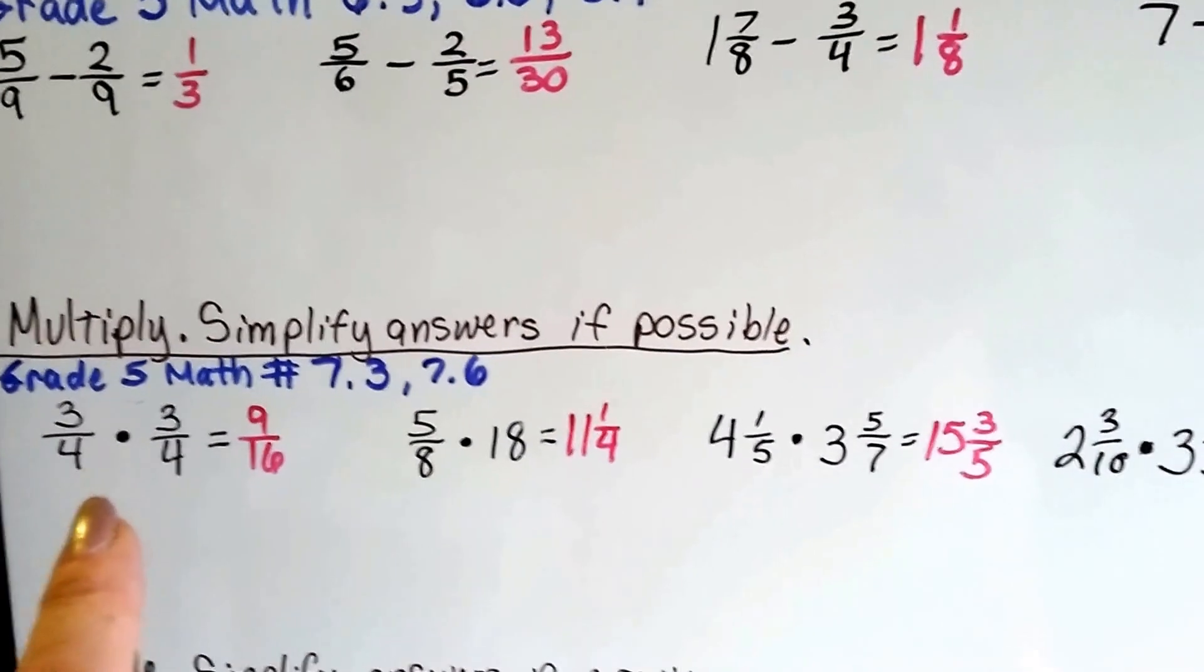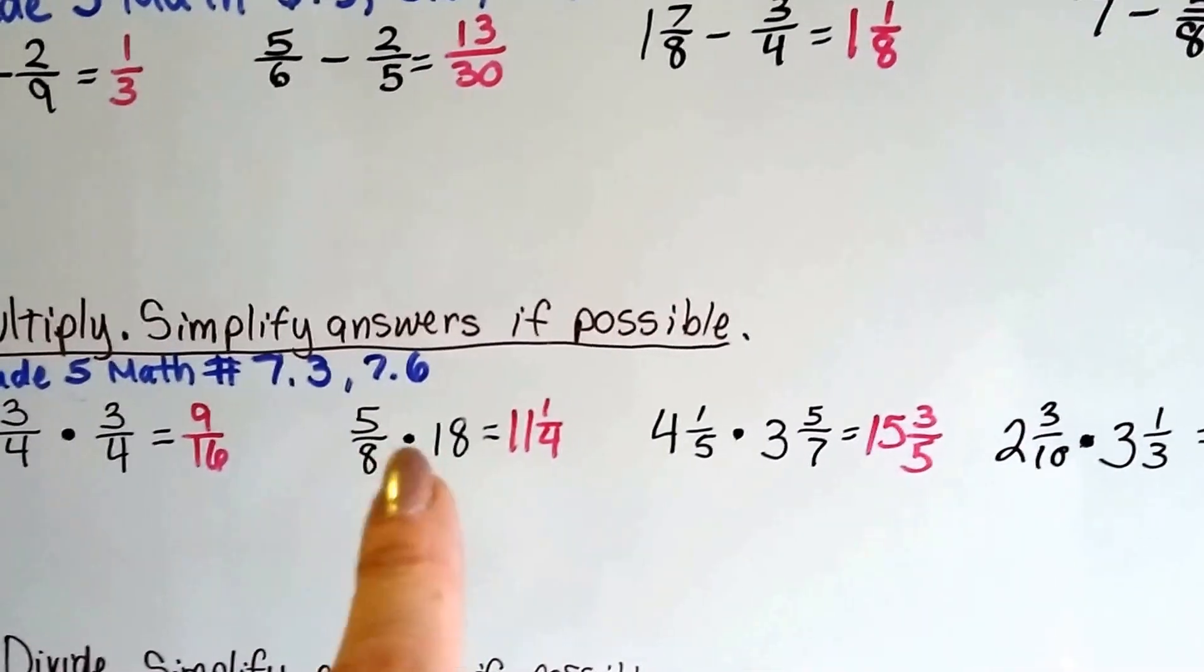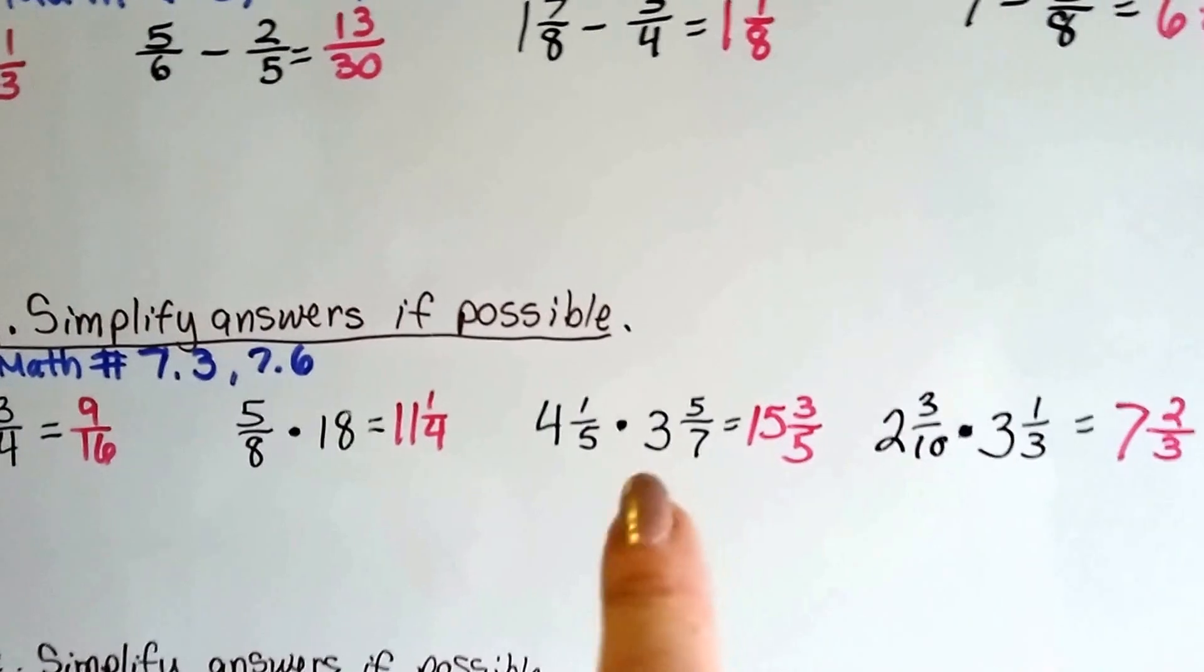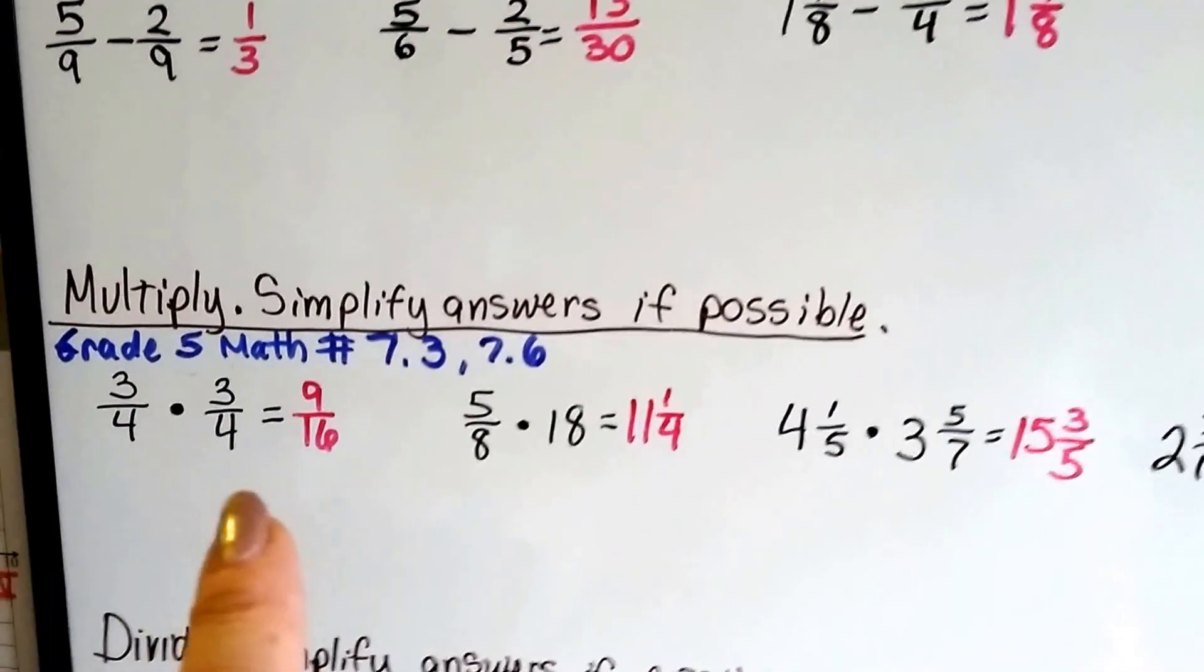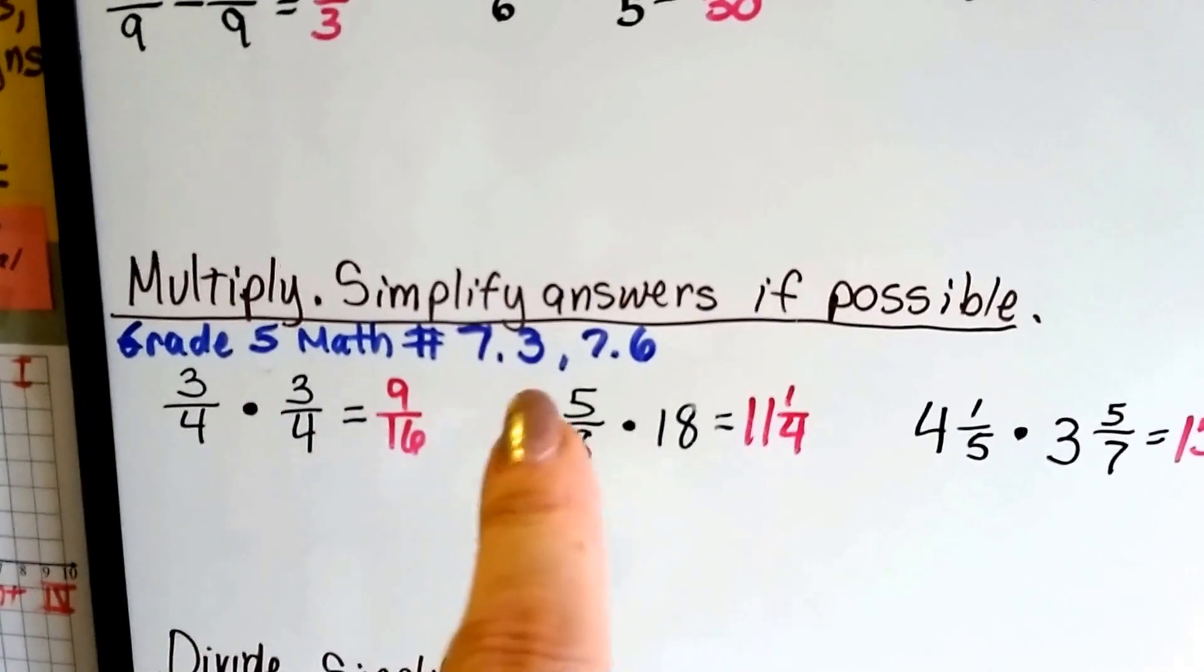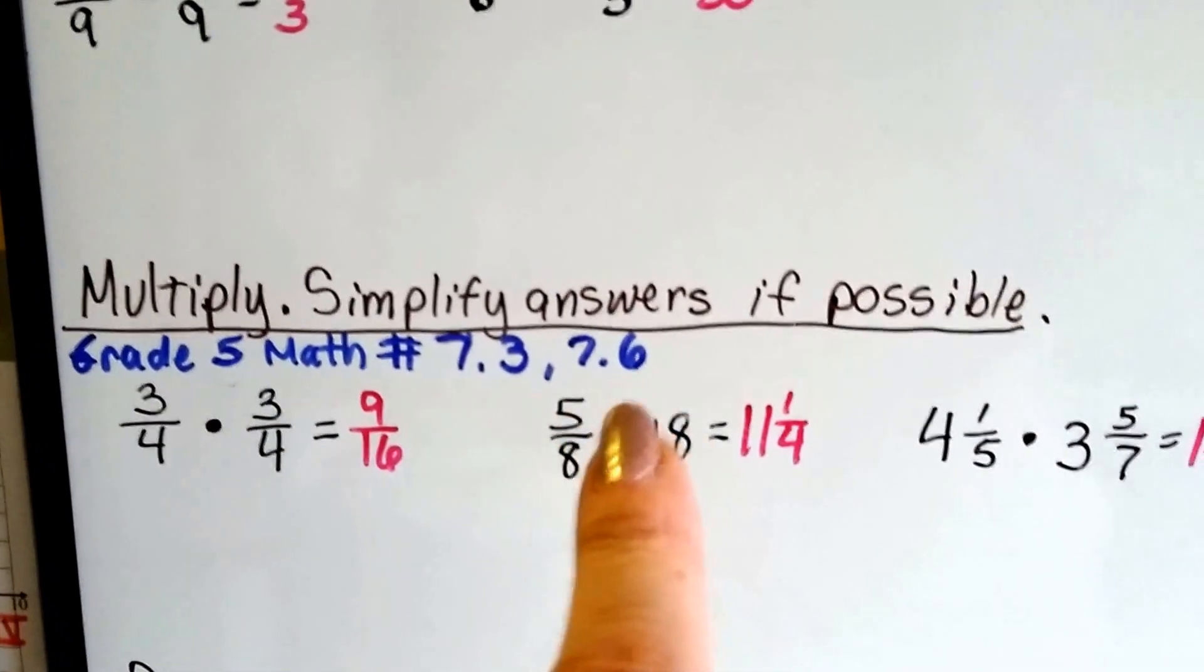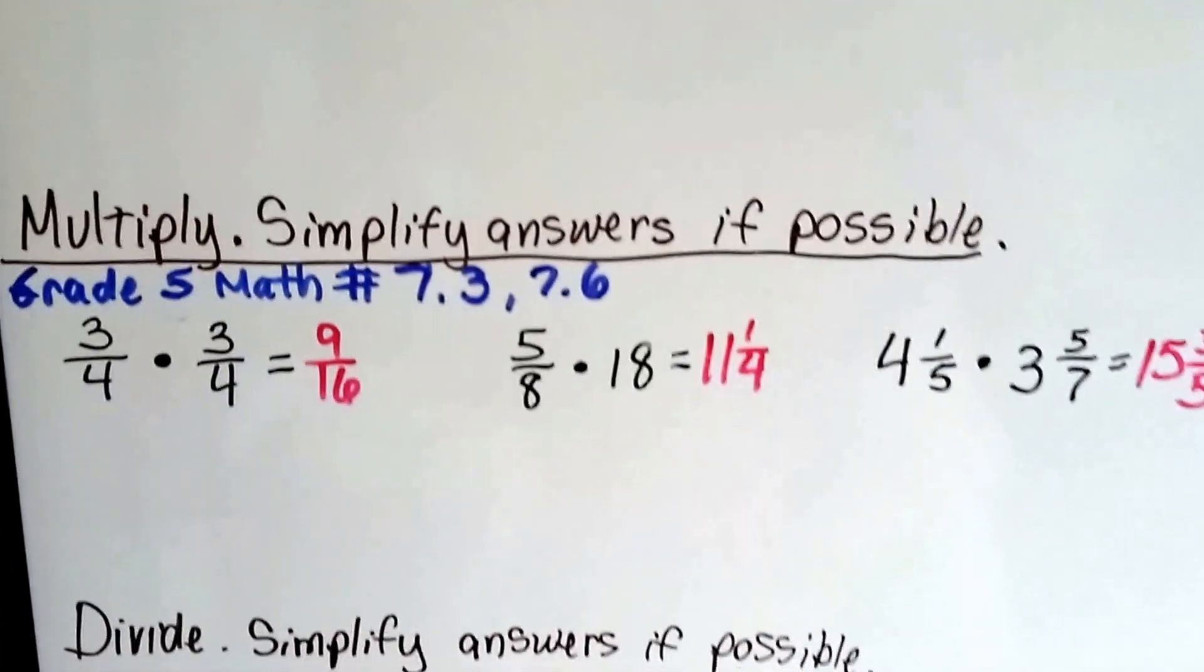You need to know how to multiply fractions with the same denominator or with a whole number or mixed numbers with different denominators. If you don't know how to do that, you need to go back to Grade 5 Math 7.3 and 7.6. You can even watch the ones in the middle between those.